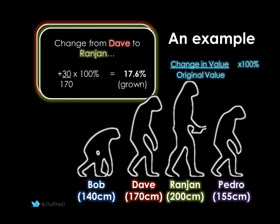Now for Dave to Ranjan, we've still got the same 30 cm growth from 170 to 200 cm. But because Dave is taller, that 30 cm growth is actually a smaller percentage of him — it's only a 17.6% growth, even though it's still 30 cm. The original value, the denominator of our formula, is a larger figure to start with, which makes sense. A small baby growing 30 cm is amazingly significant; a rather tall person growing 30 cm is less so. So 30 divided by 170 times 100 is 17.6% growth.